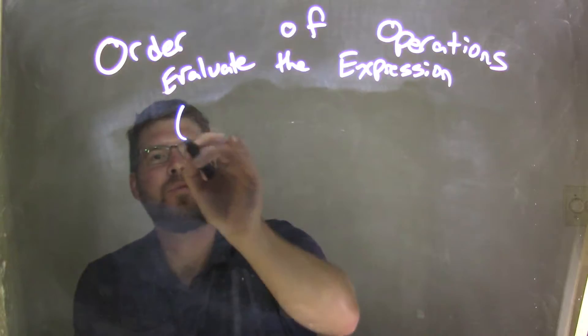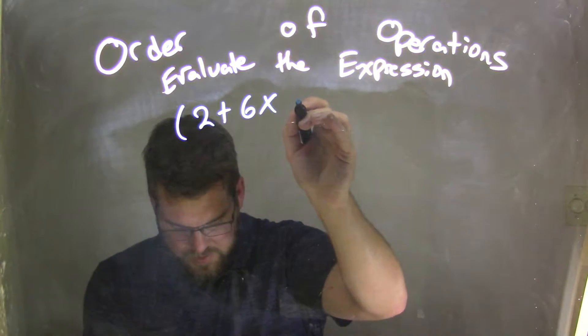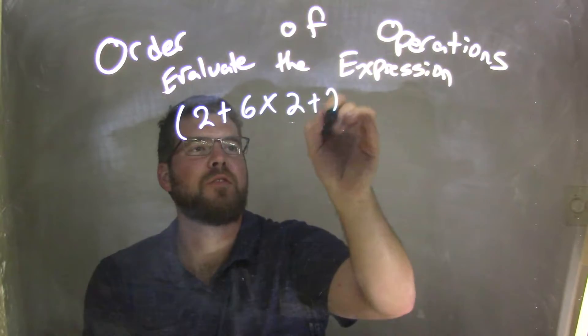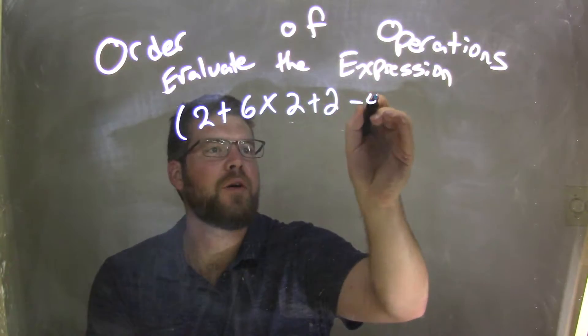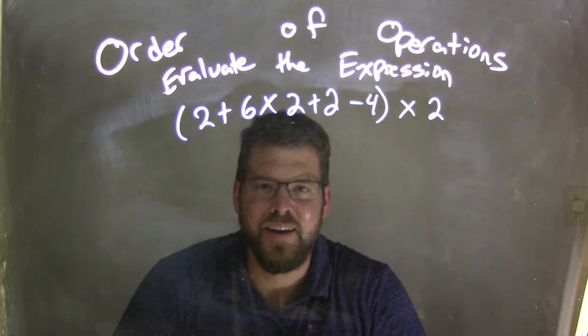So if I was given this big parenthesis here: (2 + 6 × 2 + 2 - 4) × 2, what do you think the answer is?